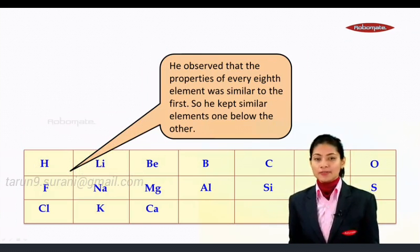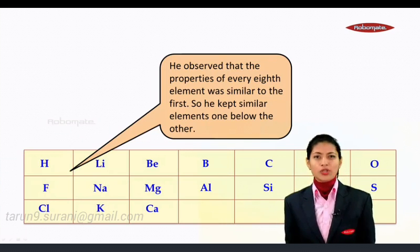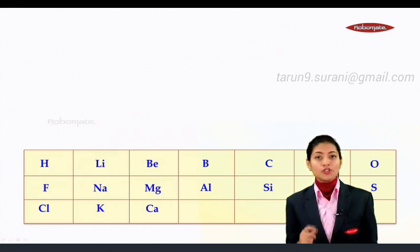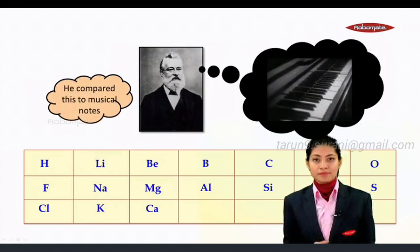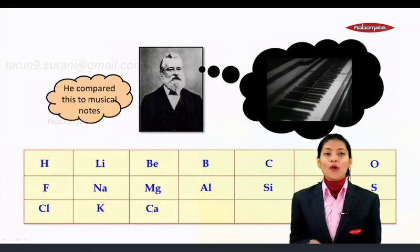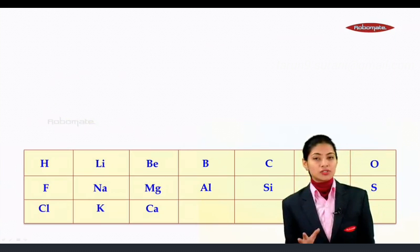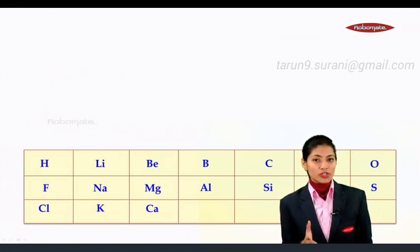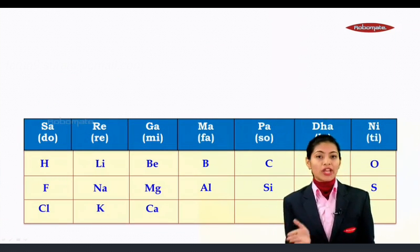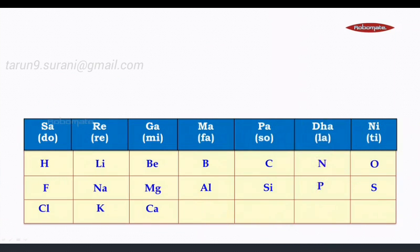But did you know that Newlands was also a music fanatic and he found music in his elements. He compared his elements to the musical notes. If we go as per western musical notes, we'll find seven notes, but by repetition it comes to eight notes. For example, do re mi fa so la ti do.